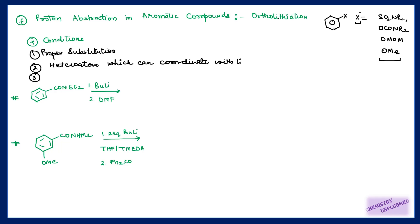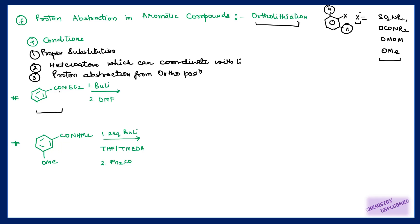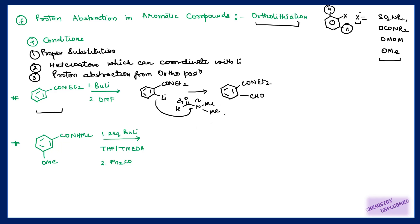The third point, which is obvious, is that proton abstraction will take place from the ortho position of these groups, because as the name suggests it is ortho-lithiation. So we will take this example: we have an amide attached, and we know it has a heteroatom which can show coordination. First we will form this organolithium compound, then we are using DMF — dimethylformamide — this lithium will be removed and aldehyde will attach here. In this way we can use this ortho-lithiation process to functionalize aromatic compounds.